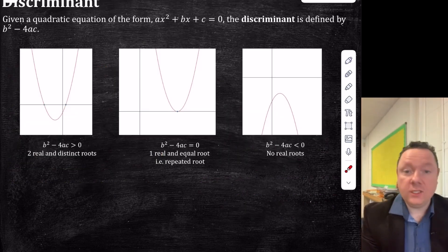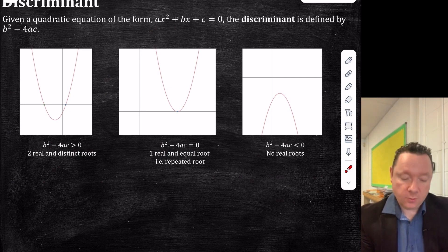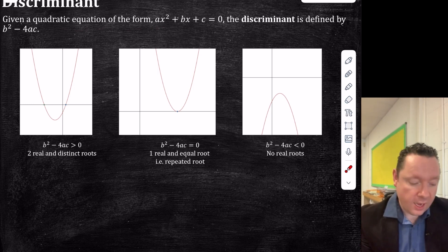Looking at quadratic versus discriminant. This is from National 5 Maths. Given a quadratic equation of the form ax squared plus bx plus c equals zero, the discriminant is the bit under the square root sign in the quadratic formula. But at higher maths you need to know that, and that's b squared minus 4ac.